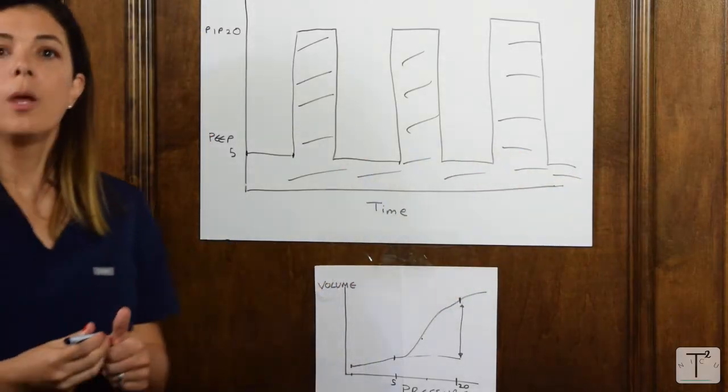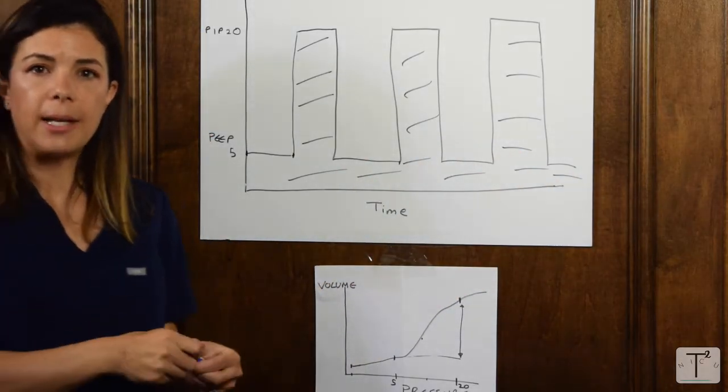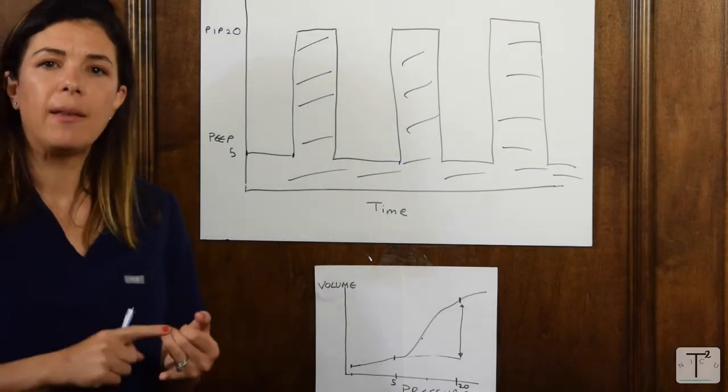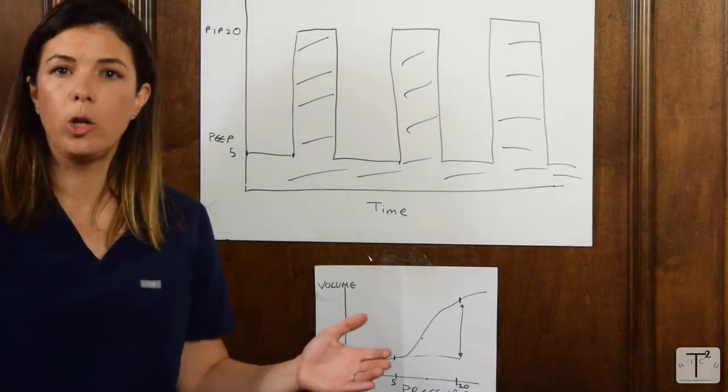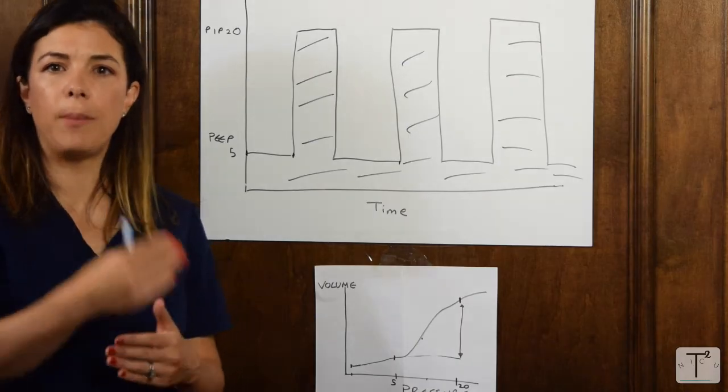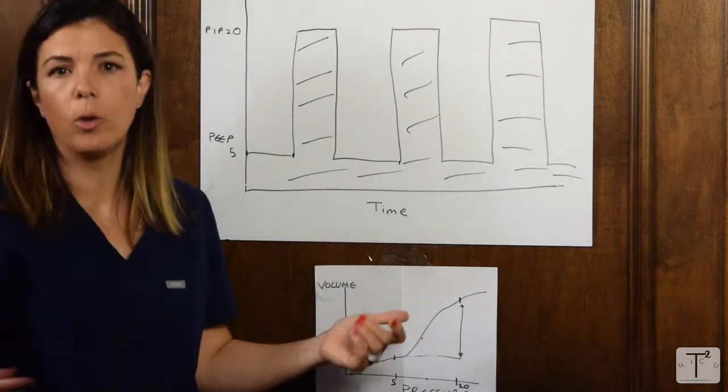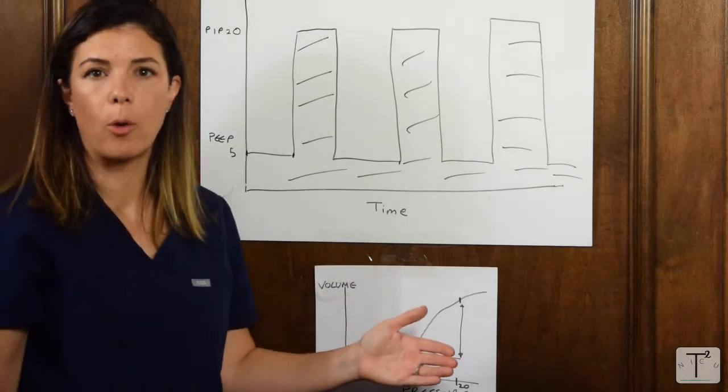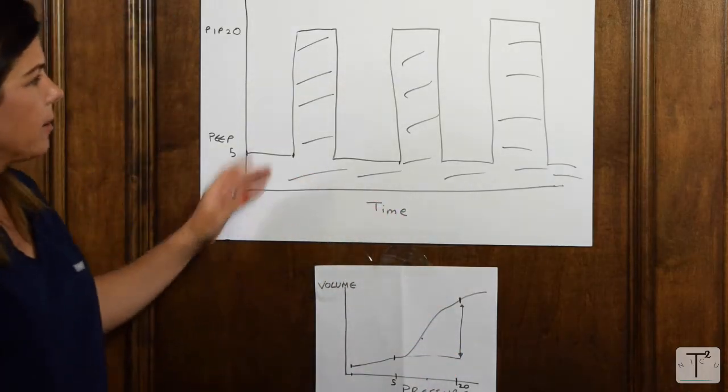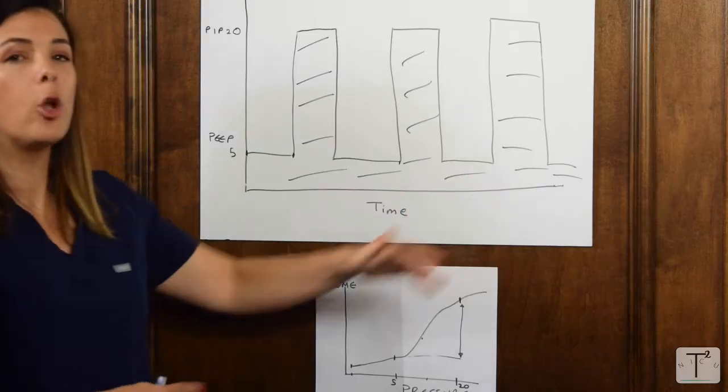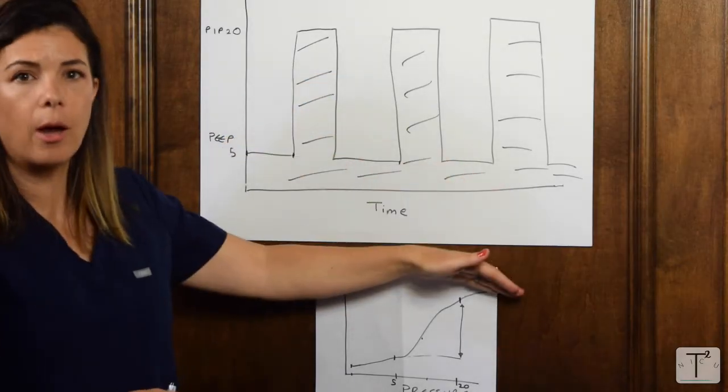If you are on a ventilator and the baby is having issues with oxygenation, what can you do? You want to increase the mean airway pressure. The first thing that you could do is increase the FiO2, at least until you're trying to figure out what's going on. What are other ways, looking at this graph, that you could also increase the area under the curve?